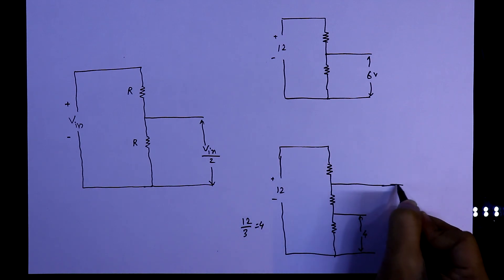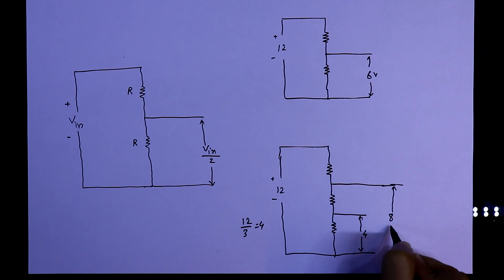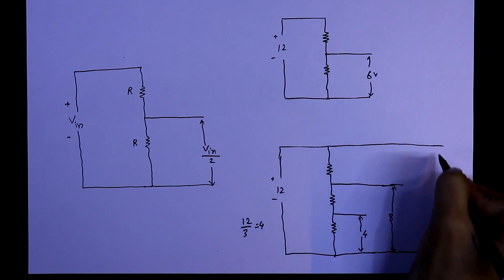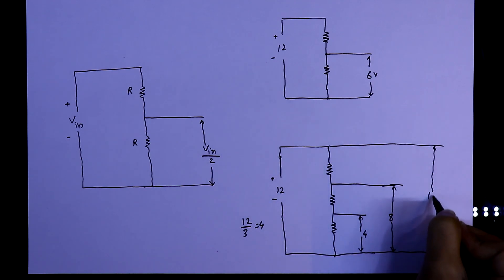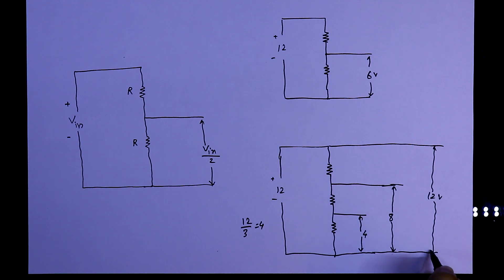At this point we will get 8 volt. And at this point we will get 12 volt. So this is how the voltage divider works. And these all values are same. If all the resistor values are same, then only we can say like this.